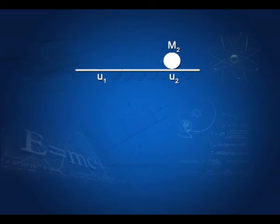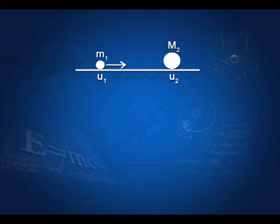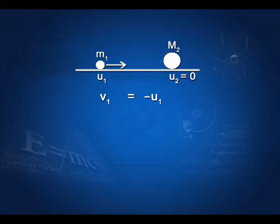Let us take another special case — a very heavy mass being struck by a small one. Here is a smooth horizontal surface with a huge mass sitting on it, and a tiny mass m1 moving toward it with speed u1, while the huge mass m2 has an initial speed of 0. Using equations 7 and 8, we can predict v1 = −u1 and v2 = 0. The heavy mass remains stationary and the small one strikes it and rebounds.